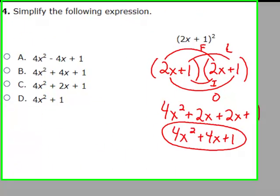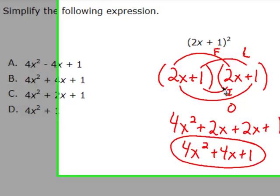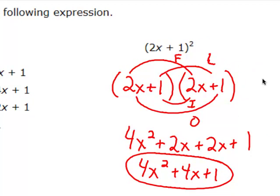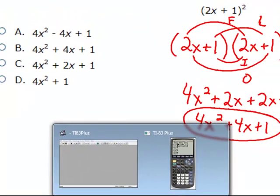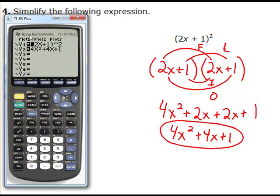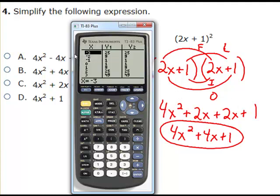Here's another simplify the expression problem — we're squaring a binomial, which is the binomial times itself. You can use FOIL, double square, or the box method. The outers and inners add up to 4x. To verify on the calculator, go to the y equals screen, type in the original problem, and underneath in y sub 2, type in what you believe the answer is. Confirm by going to the table — no matter what x value, you're getting the same outcome for both the original and your simplified answer.